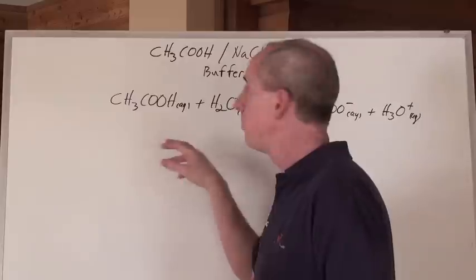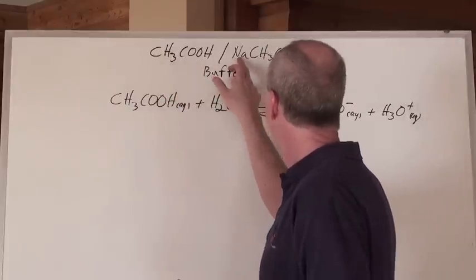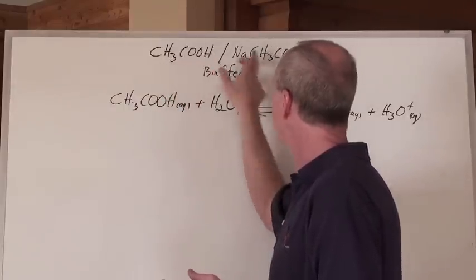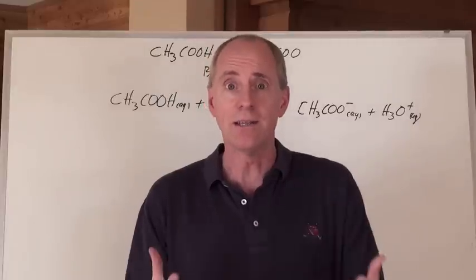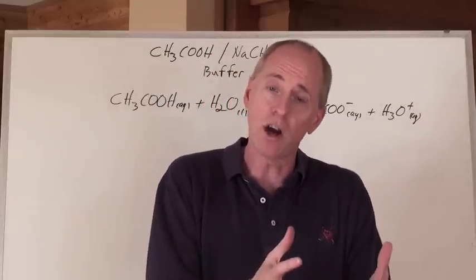This one happens to be the example we're going to be doing, is acetic acid with sodium acetate. There's a weak acid and the salt of its conjugate base. The buffer in our body is the carbonic acid-sodium bicarbonate buffer.